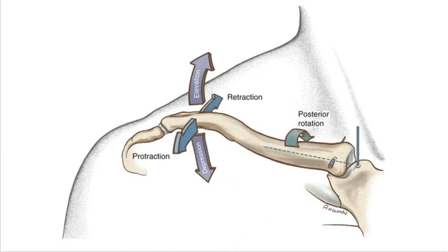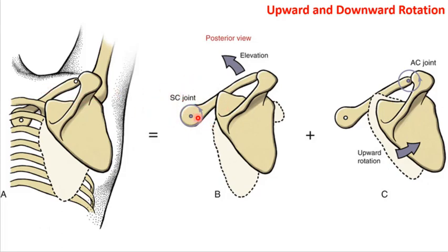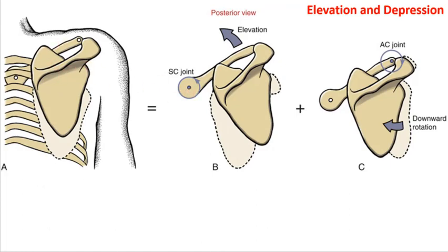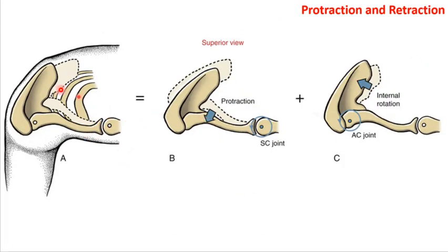All of these scapular movements of elevation and depression are combination movements of the SC joint and AC joint working in concert. If I just shrug my shoulder — the scapula going straight up — that is a combination of SC joint elevation, where the clavicle is elevating, and then downward rotation of the scapula to keep it level. For upward rotation, the SC joint does the exact same thing as a shrug; what differs is the AC joint — in a shrug it does downward rotation, in elevation it does upward rotation.